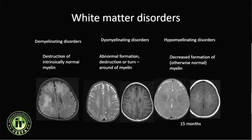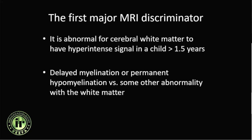When talking about white matter disorders, we should distinguish demyelinating disorders — in which there is destruction of intrinsically normal myelin — from dismyelinating and hypomyelinating disorders. When evaluating MRI in patients with suspected white matter disorders or leukodystrophies, there are three MRI discriminators to consider.